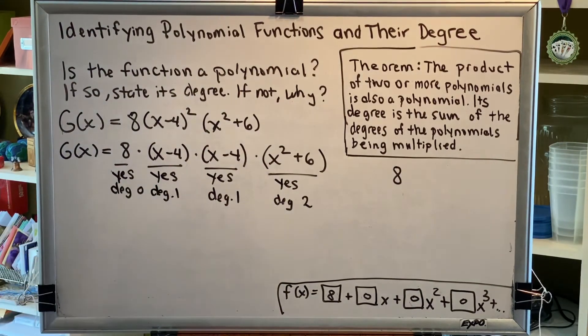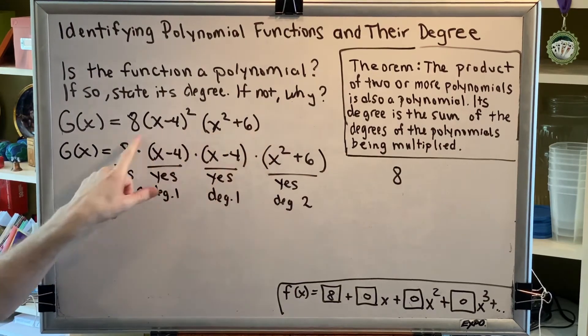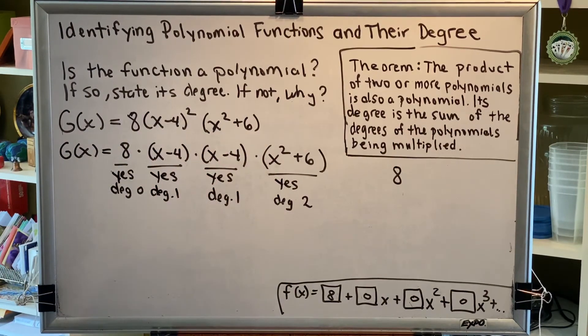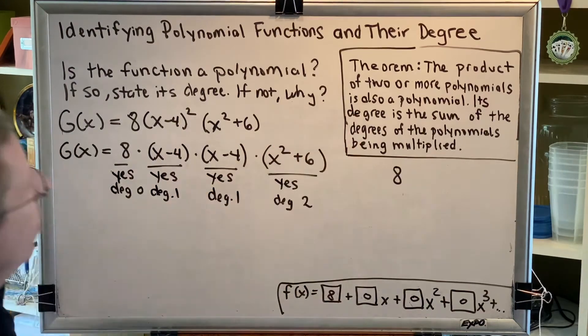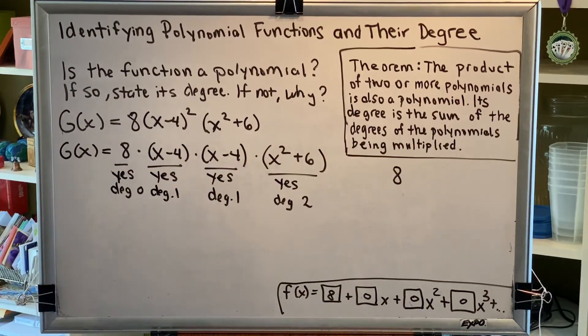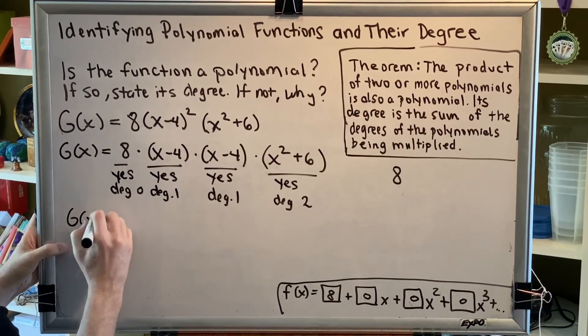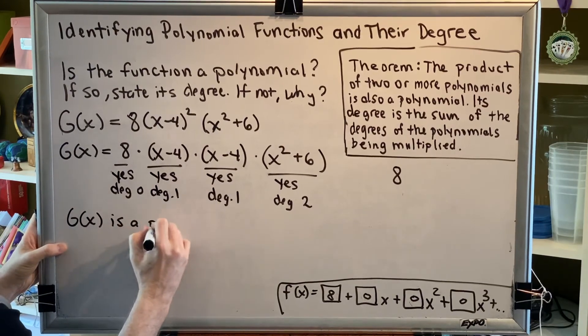Okay, so we've determined that each factor that we would have to multiply to create g of x is a polynomial. So by this theorem, g of x must be a polynomial. g of x is a polynomial.